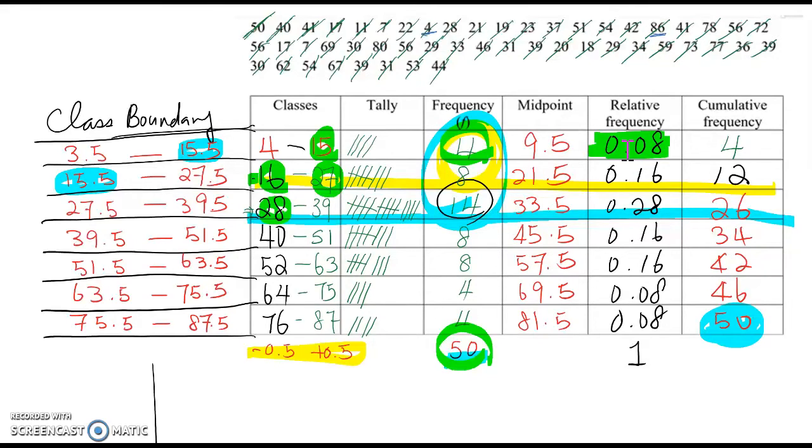So methods are exactly same, but instead of using frequency, we will use percentage value, in other words, relative frequency. So on this column here, you see 0.28 is the most percentage amount or decimal value, right? So I'm going to make around 0.3.